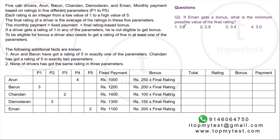Question 2: If Iman gets a bonus, what is the minimum possible value of his final rating? To get a bonus you need at least one five — that's done. Now minimize the score without getting a one. So give him: five, three, two, two, three. Total = 5 + 3 + 2 + 2 + 3 = 15. Rating = 15 ÷ 5 = 3. Option 4 is correct.